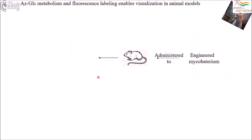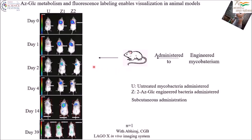What if we administer 2-azidoglucose-engineered mycobacteria to a mouse? Could we capture any fluorescent signal emitting from the mouse at different time points? Again the answer is yes. The differential between an untreated and 2-azidoglucose-treated mice could be seen at early time points.